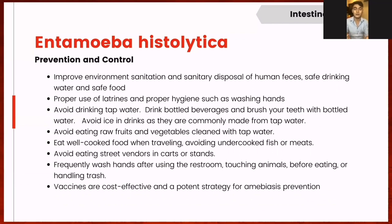For prevention and control of Entamoeba histolytica infections, improvement in environmental sanitation through sanitary disposal of human feces is called for. Consumption of safe drinking water and food prevents outbreaks. Only eat well-cooked food when traveling and observe proper hand hygiene. Vaccines are a cost-effective and potent strategy in preventing infection with Entamoeba histolytica.